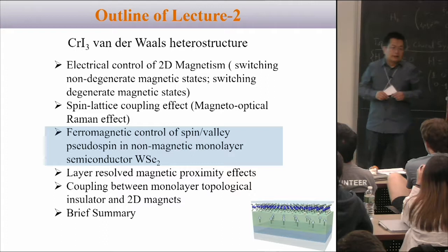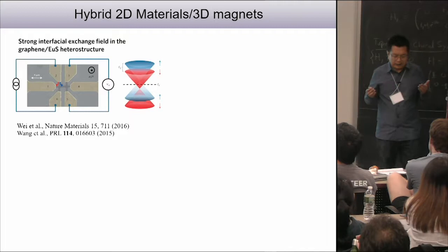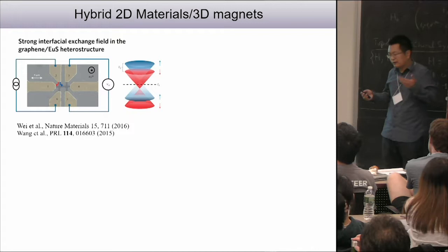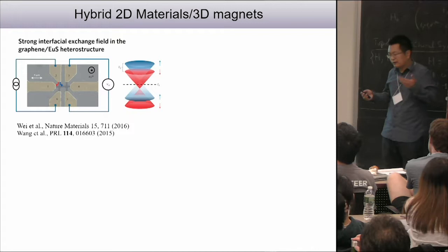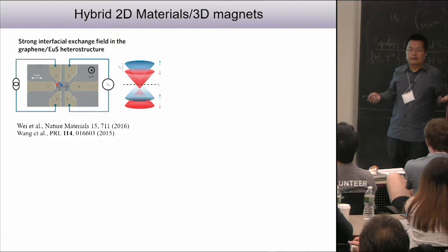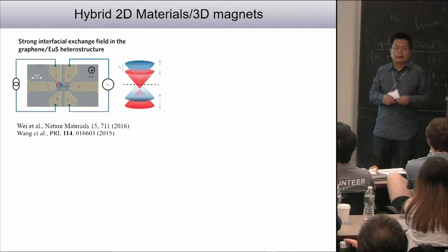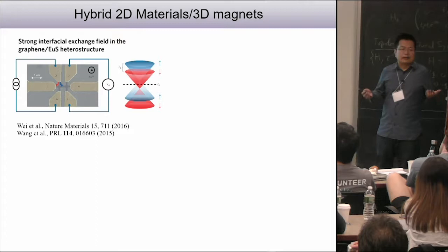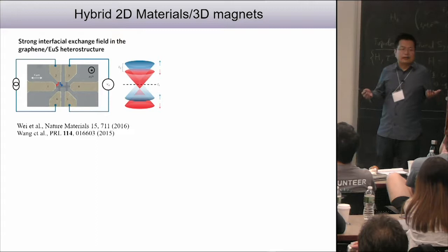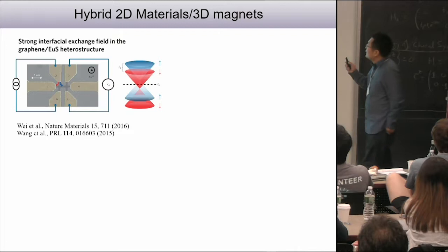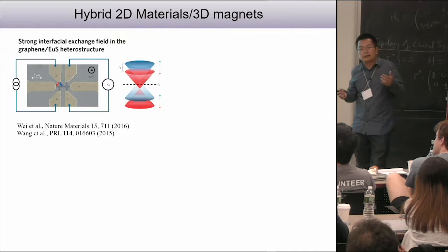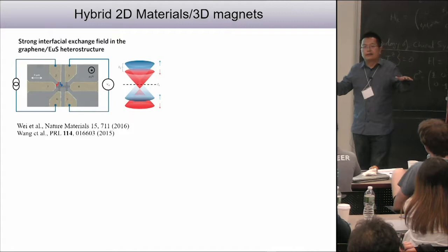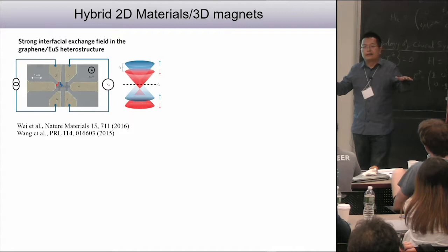Now I'm going to switch gears and talk about heterostructures. Proximity effects are quite important for engineering exotic phenomena — for example, putting a ferromagnet together with a topological insulator creates conditions for topological phenomena. What's really nice in two-dimensional systems is that because of the van der Waals structure, the atomic interface is really smooth, so proximity effects can be maximized. In 2D materials, the crystal itself is essentially an interface, so proximity effects will have maximum effect.